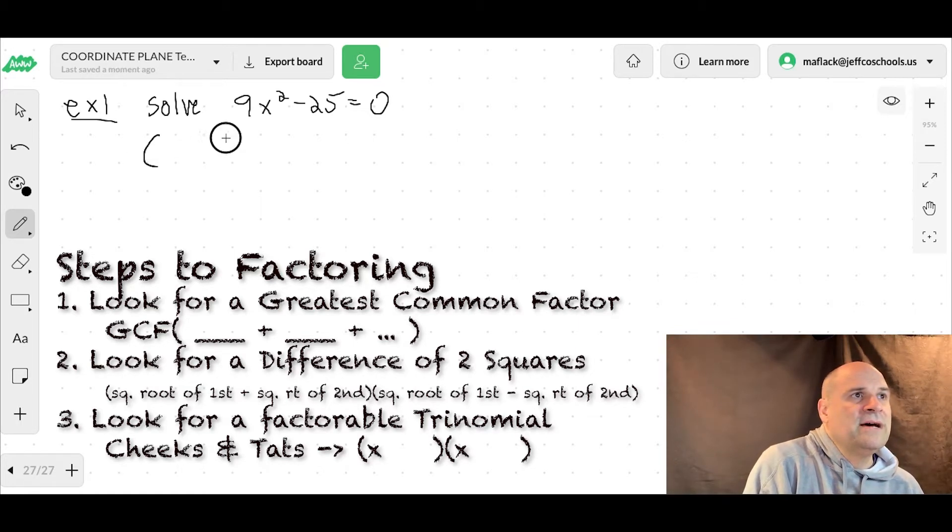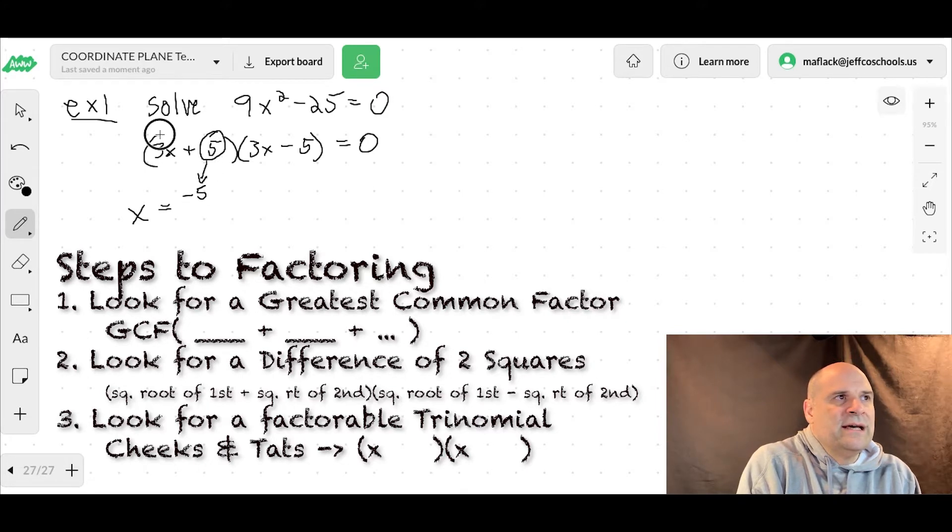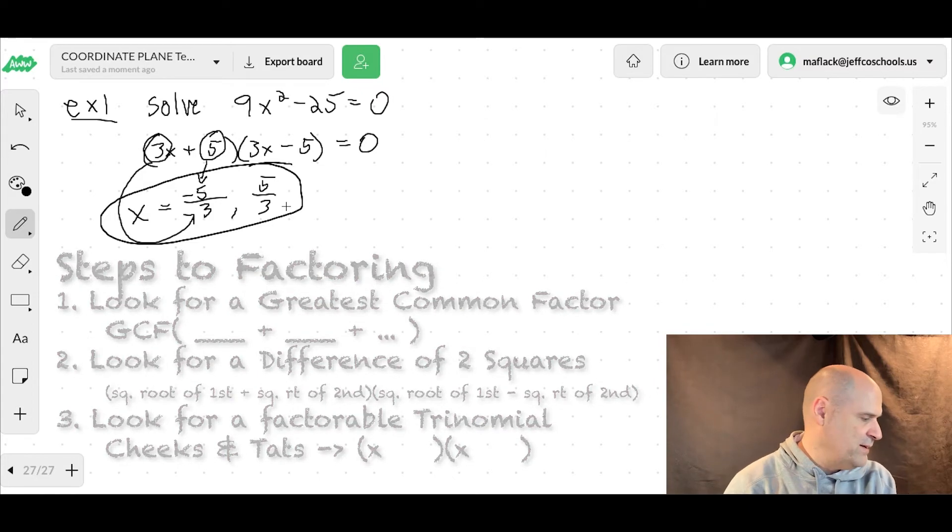The way you factor it out, square root of the first plus the square root of the second times the square root of the first minus the square root of the second. Okay? Then we can figure out our x's that will make this zero. Remember, the shortcut is this guy opposite of this guy over this guy. So the opposite of negative 5 would be 5. So our two roots for this quadratic are negative 5 thirds and positive 5 thirds. Boom!